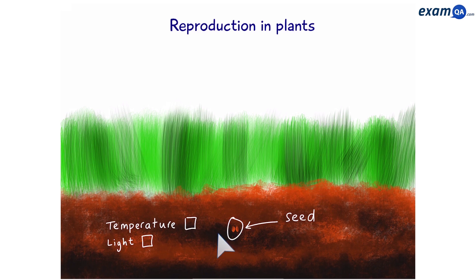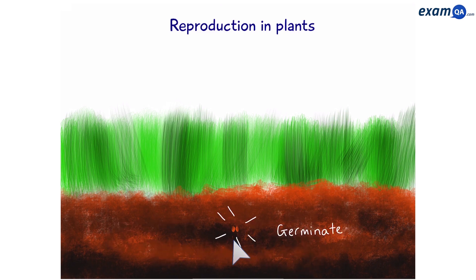Once conditions such as temperature and light intensity are correct, then the seed is ready to germinate. Soon after germinating, it will turn into a seedling and it will grow into a big healthy plant.